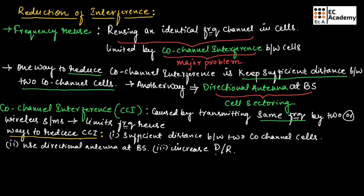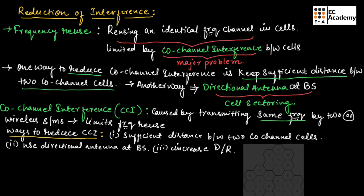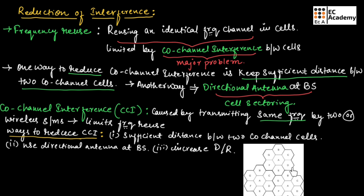D is the distance between two similar cells and R is the radius. If you consider this diagram, we have cell A in this cluster as well as cell A in another cluster. The distance between these two cells should be sufficient to avoid co-channel interference.